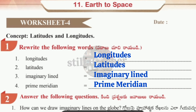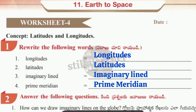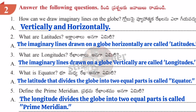Worksheet 4, Roman numeral one: rewrite the following words — Longitudes, Latitudes, Imaginary Lines, and Prime Meridian. Question one: How can we draw imaginary lines on a globe? Answer: Vertically and horizontally.